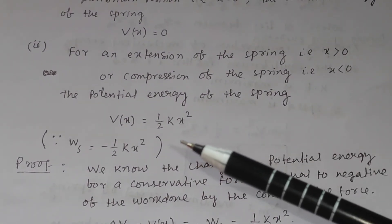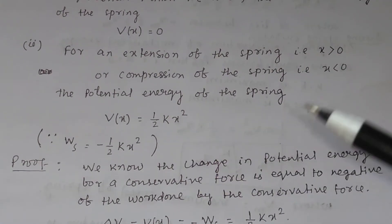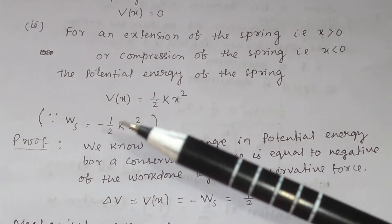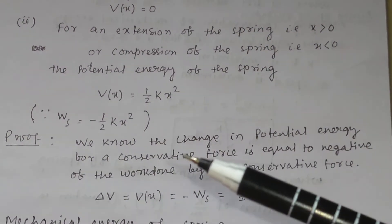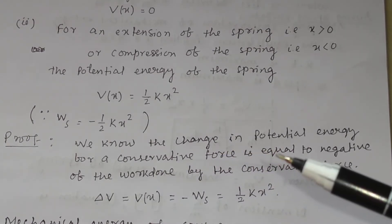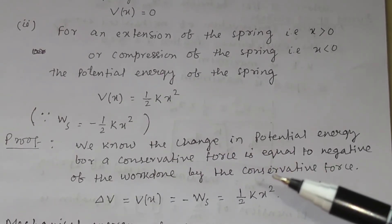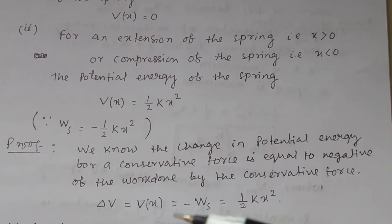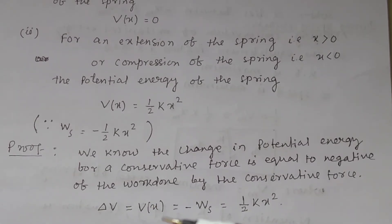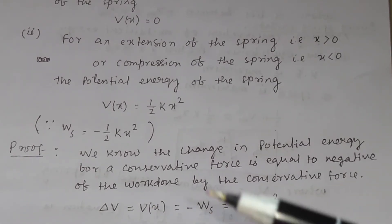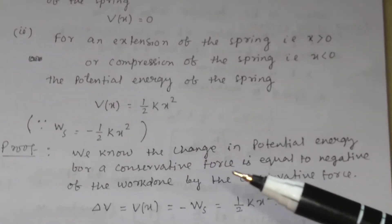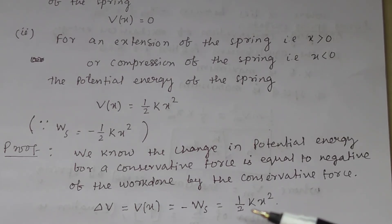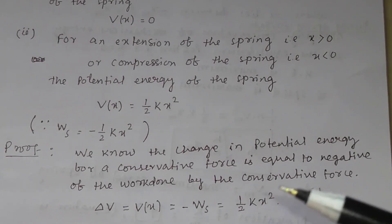Why is the potential energy equal to ½kx²? Because the work done by the spring is -½kx², and the change in potential energy for a conservative force equals the negative of the work done by that force. So ΔV = -W, and since W = -½kx², the potential energy of the spring is ½kx².